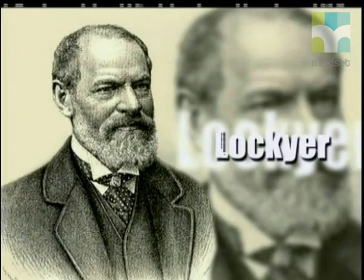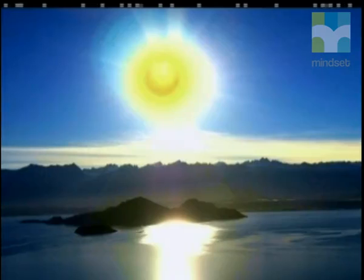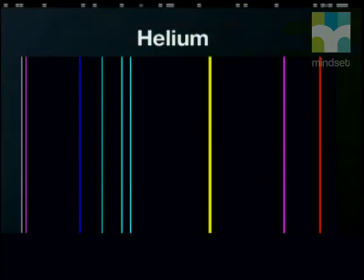Sir Norman Lockyer, a British astronomer, discovered helium in the most unusual way. He passed light coming from the sun through a spectrometer and noticed a line emission spectrum that was quite different to any known element.